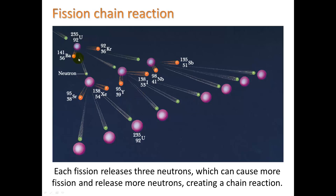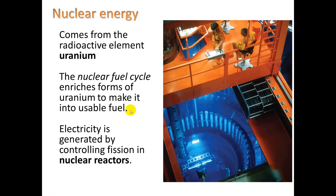Each one of those neutrons goes off and hits another uranium atom, splitting it and releasing three more neutrons, and so forth. The reaction chamber — the core — is filled with water, and you lower fuel rods containing uranium into it. Very importantly, you also have control rods made of graphite, which is carbon. Those rods can absorb neutrons to slow down or even stop the nuclear chain reaction.